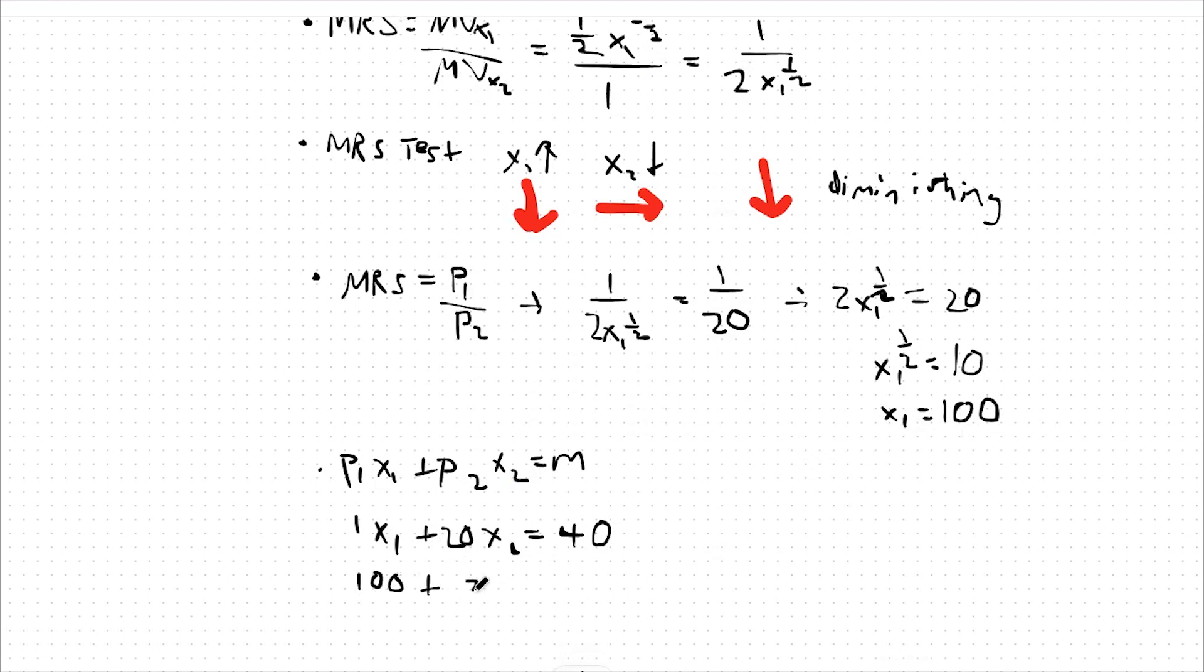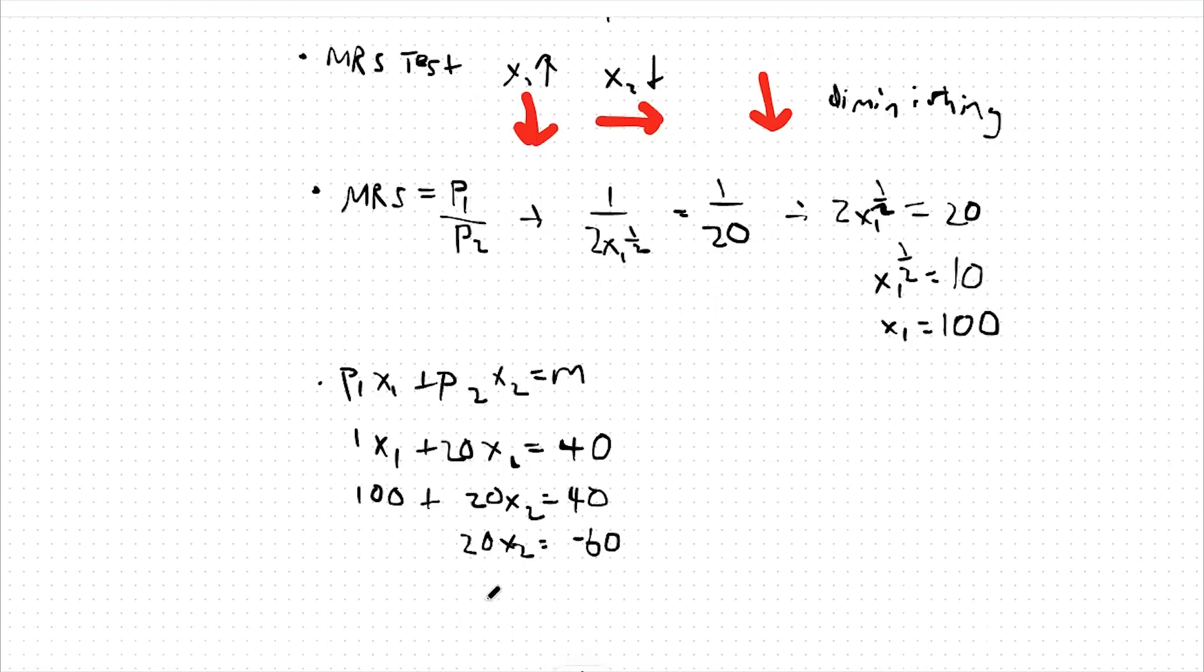We already found that x1 is equal to 100, so we can plug that in here. 100 plus 20x2 equals 40. 20x2 equals negative 60. So x2, optimally, equals negative 3.